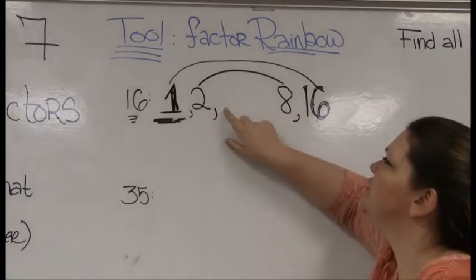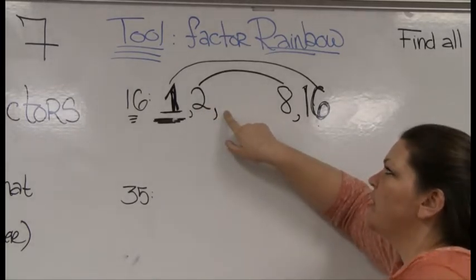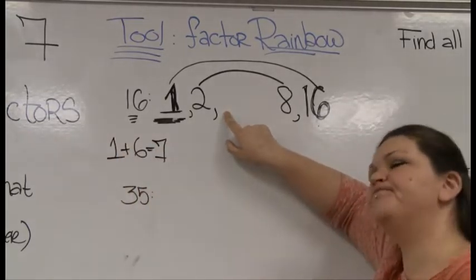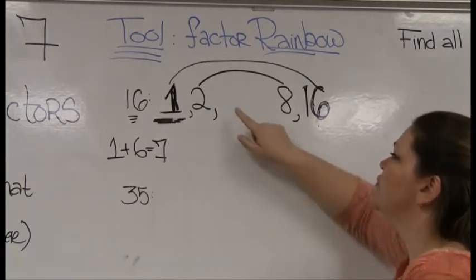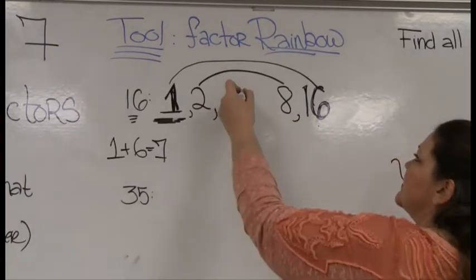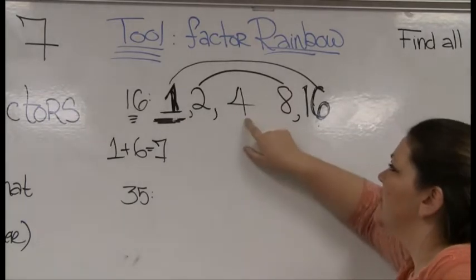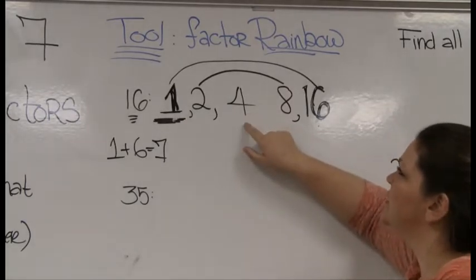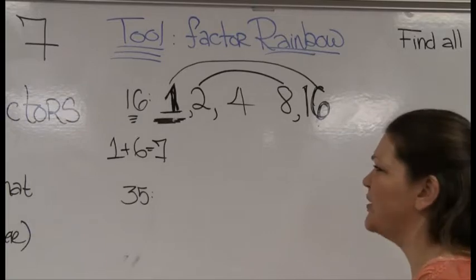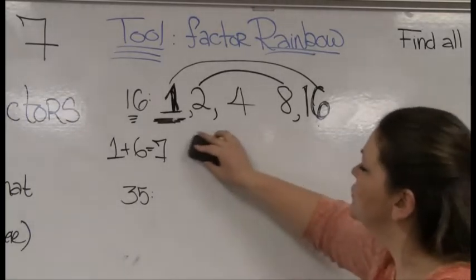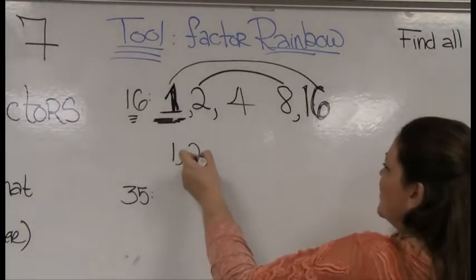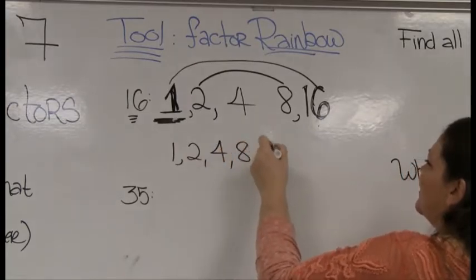Next number after 2 is 3. Does 16 divide by 3? A quick sum-of-digits trick: 1 plus 6 equals 7 — that tells me there's no 3 in there. Moving on: does 16 divide by 4? Indeed it does, and 4 times 4 is 16, so 4 is right in the middle of this factor rainbow. I don't need to write it twice. There's my factor rainbow for 16: all the factors are 1, 2, 4, 8, and 16.